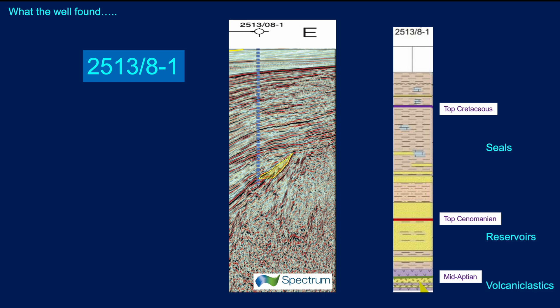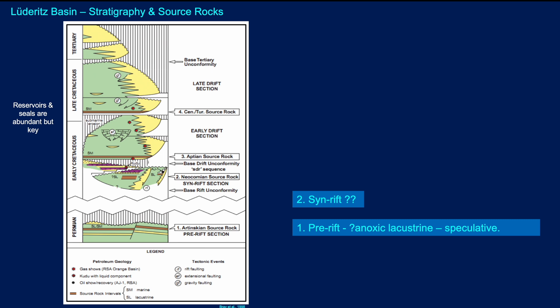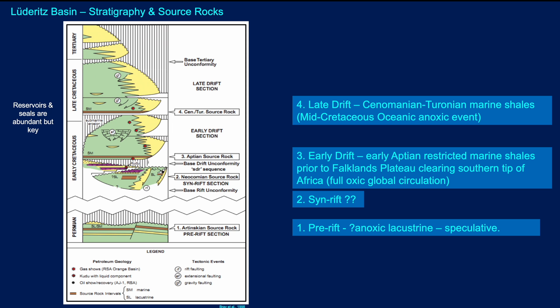There's no shortage of seals or reservoirs, but the well actually penetrated Aptian-aged volcanoclastics. Within the greater region, this would be the model for the basin — no worries about seals or reservoirs if we can find them in the right place. In terms of source rocks, there's potential for pre-rift and syn-rift source rocks. We know we have the Aptian restricted marine shales. Prior to the separation of the Falkland Plateau, there probably weren't anoxic conditions to deposit source rocks before fully oxic global circulation got established. In the mid-Cretaceous oceanic anoxic event, we anticipate a good development of Cenomanian-Turonian marine shales — highly likely there are good source rocks within the Lüderitz.